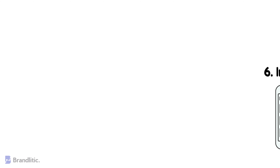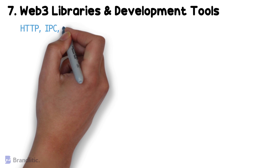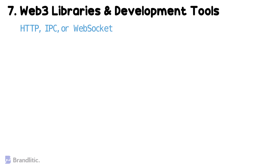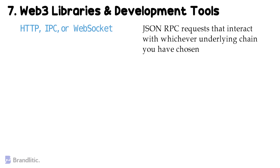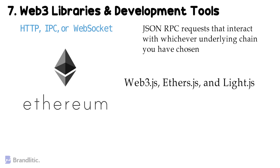Tech stack component #7: Blockchain Interaction — Web3 Libraries and Development Tools. Various Web3 libraries allow you to interact with nodes using HTTP, IPC, or WebSocket, writing intuitive one-line methods to initialize JSON-RPC requests for whichever underlying chain you've chosen. On Ethereum, common Web3 libraries include Web3.js, Ethers.js, and Lite.js. Additionally, many chains have developer tools for faster iterations than public testnets, such as Ganache, Truffle, Hardhat, and Brownie.